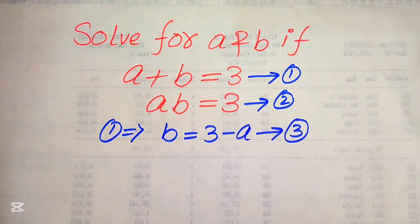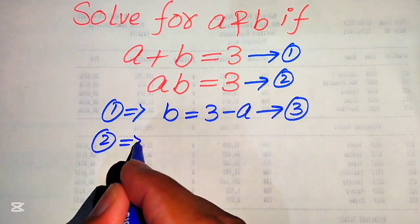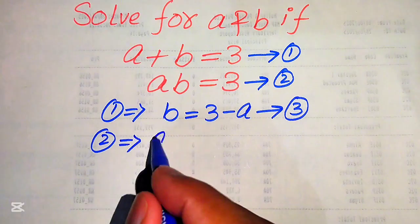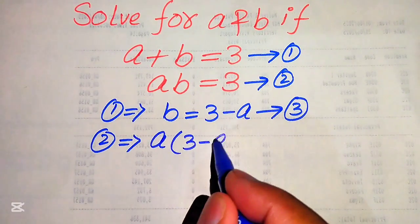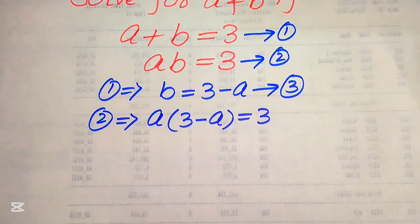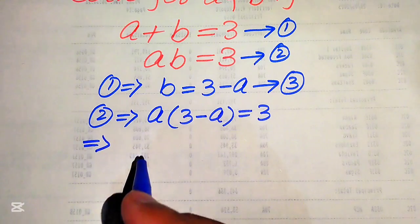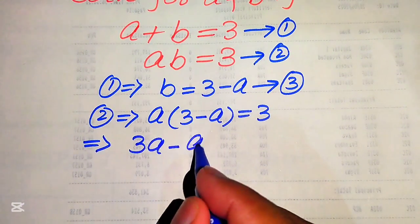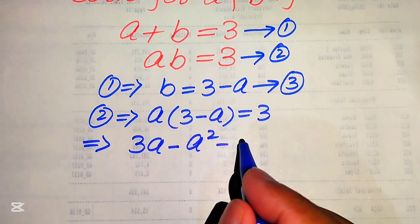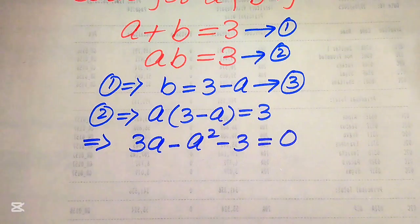Now we put this value of B in equation number 2. So equation number 2 implies that AB, when we substitute B, becomes A times of 3 minus A equals to 3. We then multiply A through both values to get 3A minus A squared, and moving plus 3 to the left side it becomes minus 3, so the whole equation equals 0.